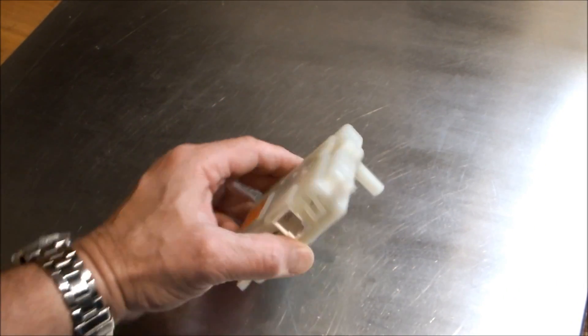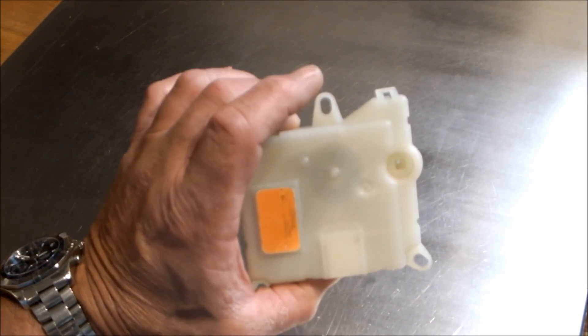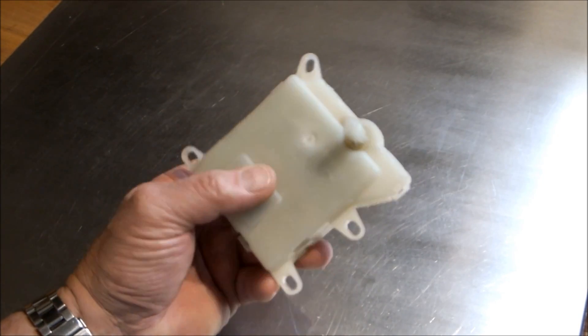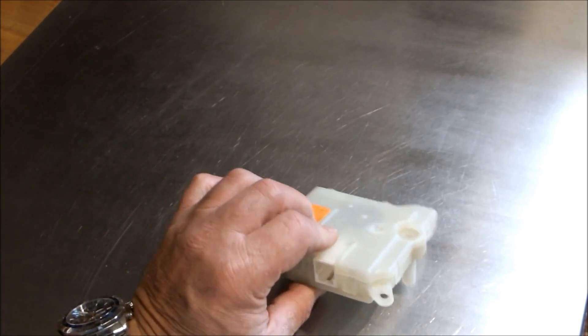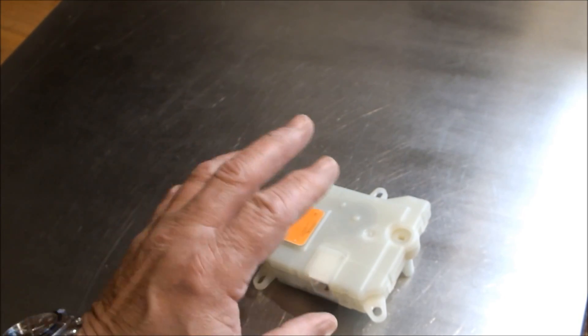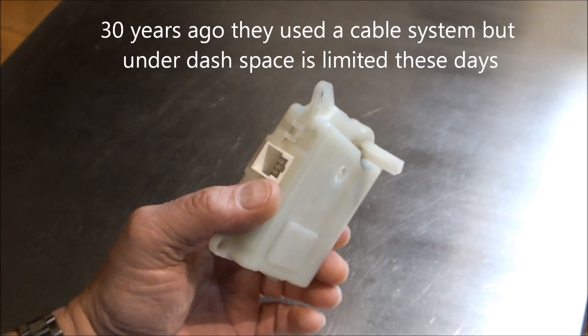Welcome to CarQuestions. What we have here is a blend door module out of a Ford product, and this is what makes the car able to go from cold to hot when you turn the little knob on your dashboard.